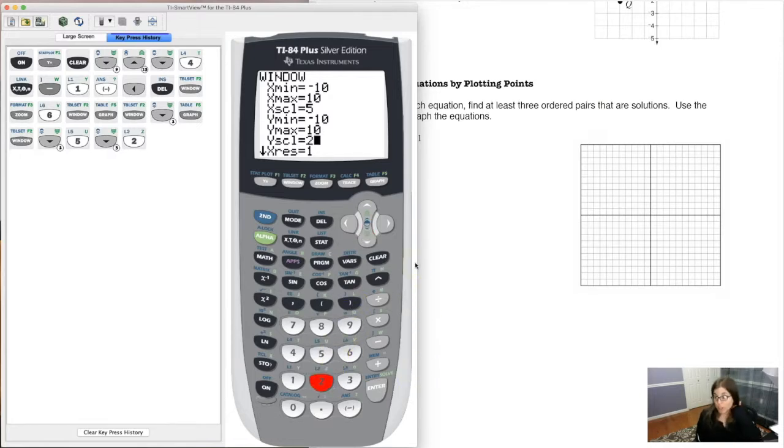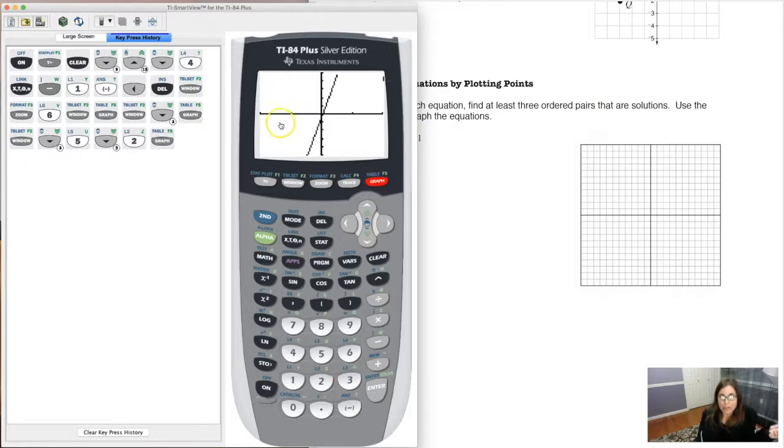Now, whenever you adjust your window, like I have, you don't want to hit zoom 6 again. If you hit zoom 6, it's going to reset to what we just had. Once you change your window, and sometimes we will, hit graph. All right, if I hit graph, now you can see I've made a tick mark at negative 10, negative 5, 5 and 10, and this is negative 10, negative 8, negative 6, negative 4, 2, you know what I'm trying to say, 2, 4, 6, 8, 10, every two units, okay?